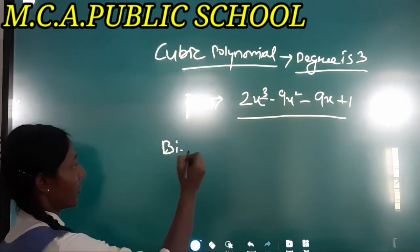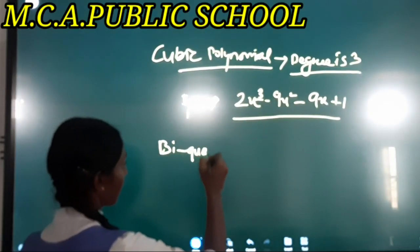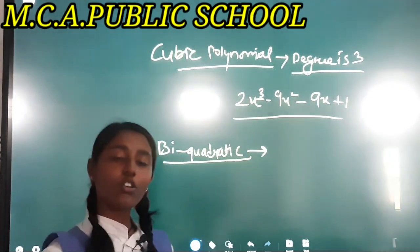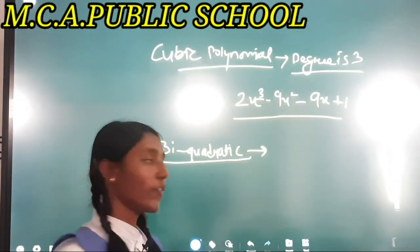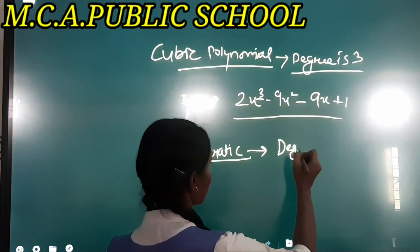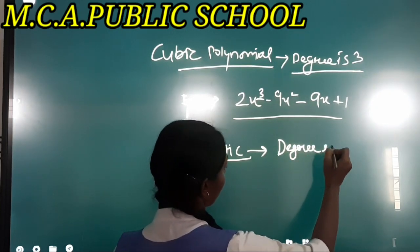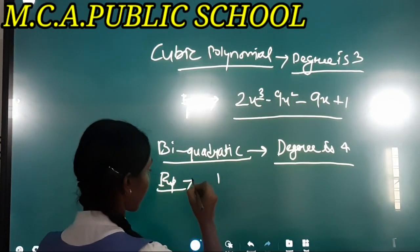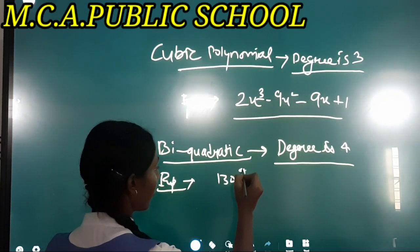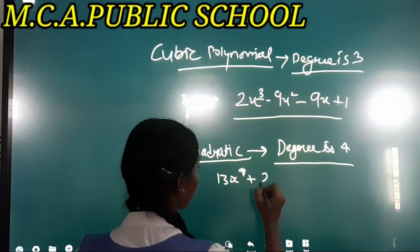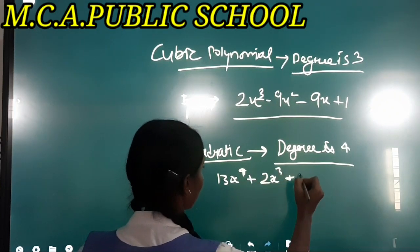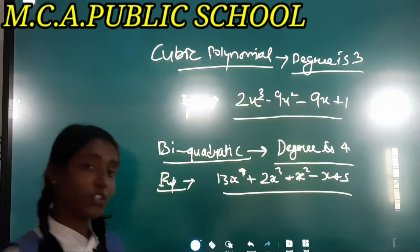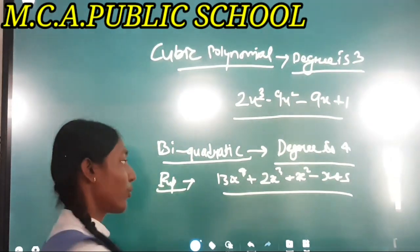A biquadratic polynomial is a type of polynomial whose degree is four. For example, 13x⁴ + 2x³ + x² − x + 5 is an example of a biquadratic polynomial because the degree of this polynomial is four.